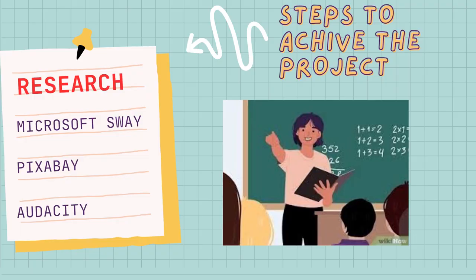Now I'm going to explain the steps to achieve this project. First, we will assign each group of students a specific habitat to research, such as a rainforest, a desert, or an ocean. We will instruct students to gather information about their assigned habitat, including its characteristics, climate, flora, fauna, and unique features. The teacher will encourage students to use reliable sources — books, websites, and videos — to gather accurate information.